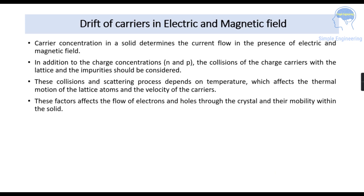Next is the drift of carriers in the electric and magnetic field. Carrier concentration in a solid determines the current flow in the presence of an electric and magnetic field. In addition to the charge concentrations — electrons N and holes P — the collision of charge carriers with the lattice and impurities must be considered. These collisions and scattering depend on temperature, which affects the thermal motion of lattice atoms and the velocity of the carriers, thereby affecting the flow of electrons and holes and their mobility within the solid.